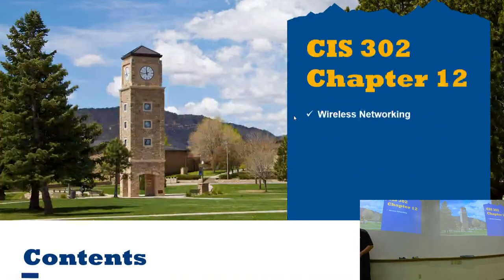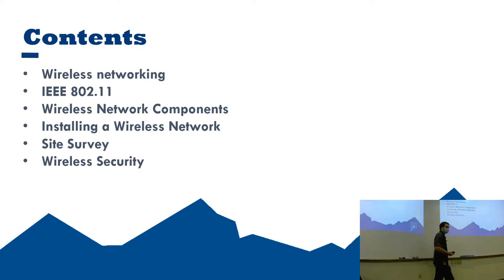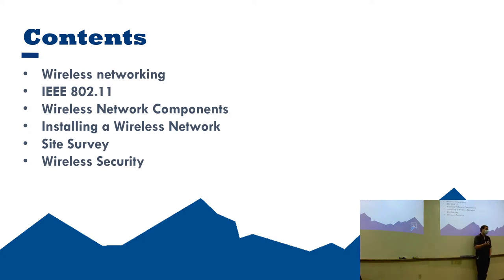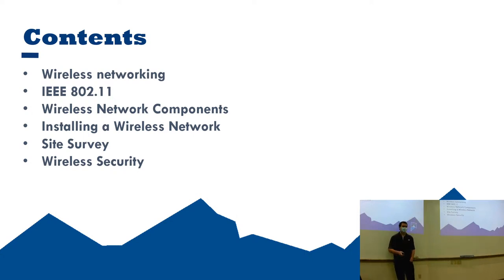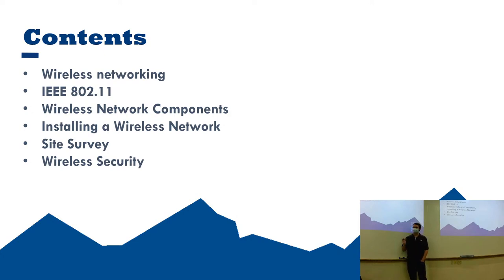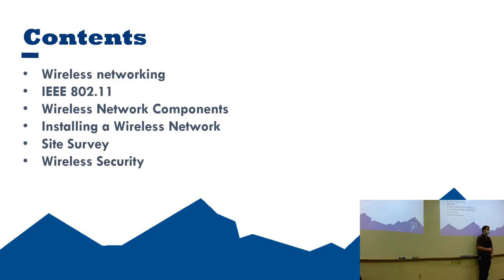Today's all about wireless networking, specifically talking about the different standards associated with it. The book doesn't do a great job talking about more modern standards. In the lecture, I'll make sure we're updated on all the new wireless changes, because there's been a lot in the past couple of years — Wi-Fi 6, using Wi-Fi on the 6 gigahertz spectrum. We'll also cover wireless networking components, site survey tips and techniques, and wrap up with a bit on wireless security. The next few chapters go more in depth on wireless security.